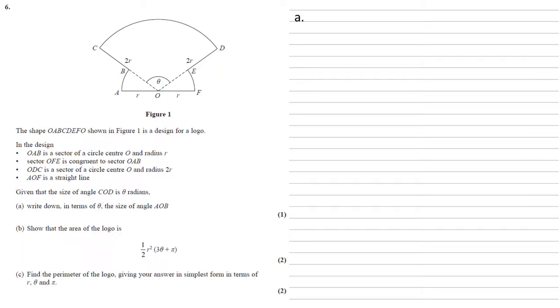AOF is a straight line. Given that the size of angle COD is theta radians, we need to write down in terms of theta the size of angle AOB.